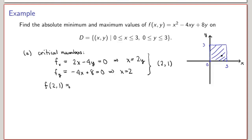Evaluating the function at the critical point (2, 1): f(2,1) = 4 − 4·2·1 + 8·1 = 4 − 8 + 8 = 4. We keep track of this value to compare later.